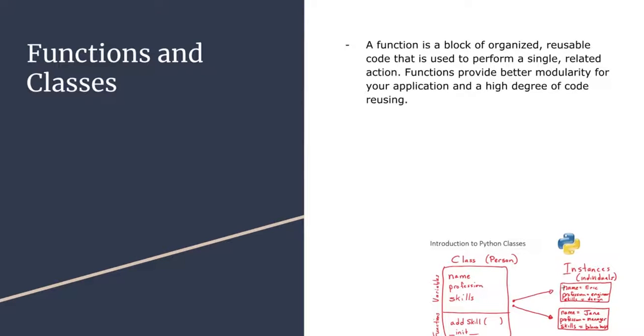As you see here, you can have a class which contains different functions. So, a class, for example, could be a person, and this person has some properties associated with it, like variables we have seen before.